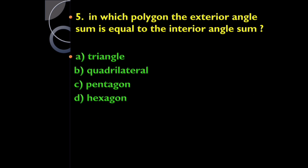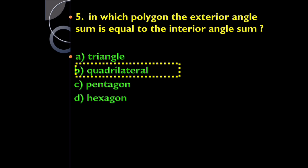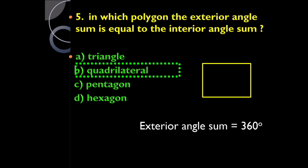Question five: in which polygon is the exterior angle sum equal to the interior angle sum? It is a quadrilateral, because in a quadrilateral the exterior angle sum is 360 degrees and the interior angle sum is also 360 degrees.